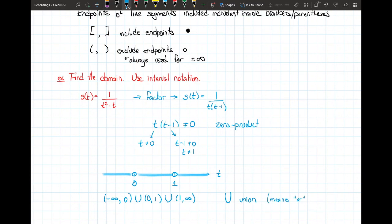It means or, essentially, for sets of numbers. Or just sets in general, as we'll find. You could just read this as t can be any number from negative infinity to 0, or any number from 0 to 1, or any number from 1 to infinity.